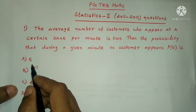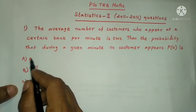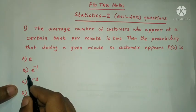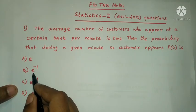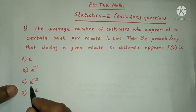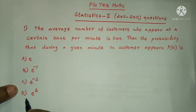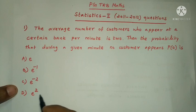Here are the answers. Option A: E. Option B: E power minus 1. Option C: E power minus 2. Option D: E power 2.